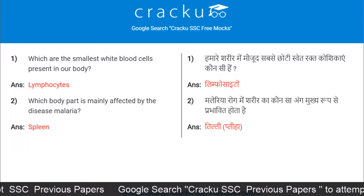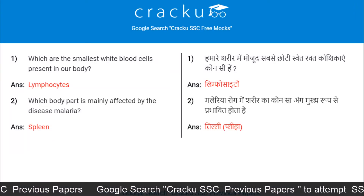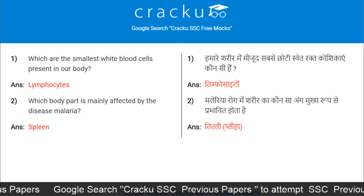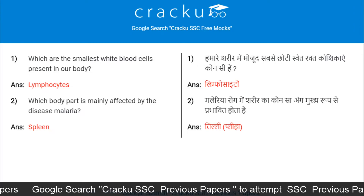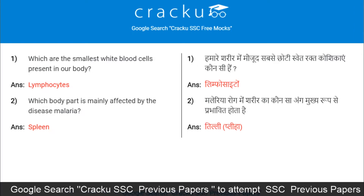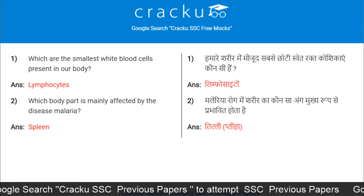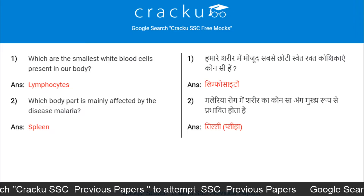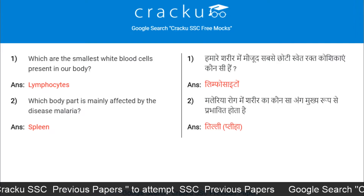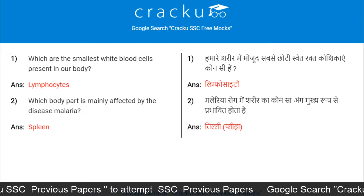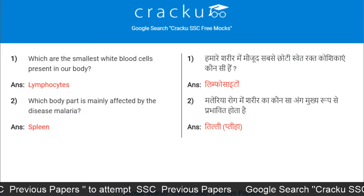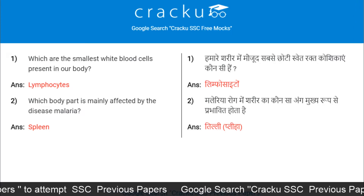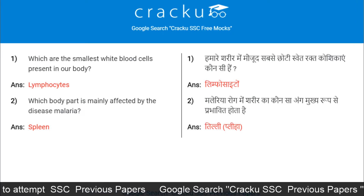Which are the smallest white blood cells present in our body? Lymphocytes. Which body part is mainly affected by the disease malaria? Spleen.